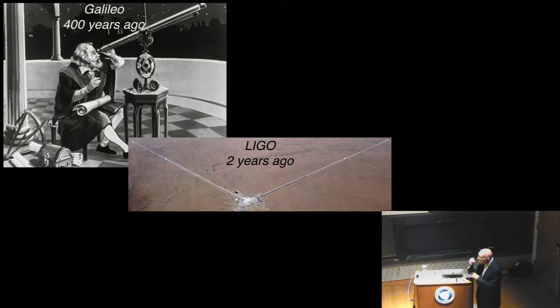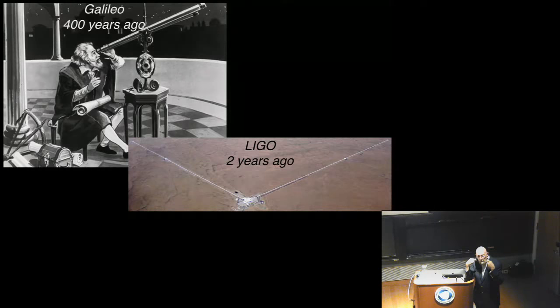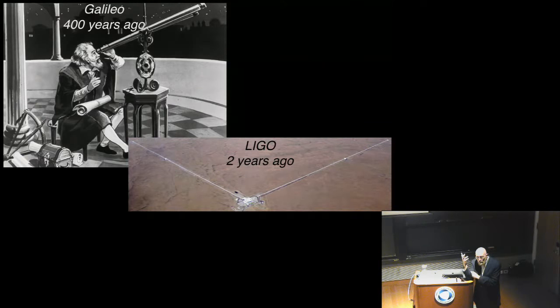Let me conclude: 400 years ago, Galileo built his optical telescope and discovered the moons of Jupiter and craters on our moon. About two years ago, the LIGO scientists turned on our gravitational wave detectors and discovered gravitational waves from colliding black holes. There are only two kinds of waves that can travel across the universe bringing us information about what's far away: electromagnetic waves and gravitational waves. So LIGO has done what Galileo did — Galileo did it for electromagnetic waves, LIGO has done it for gravitational waves. I invite you to speculate what will be seen with gravitational waves over the next 400 years. Thank you.